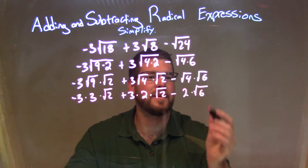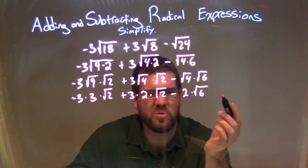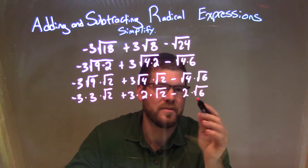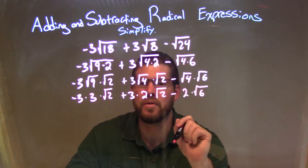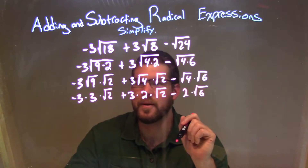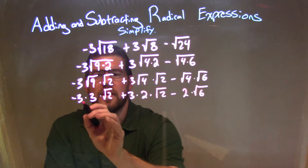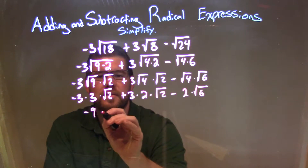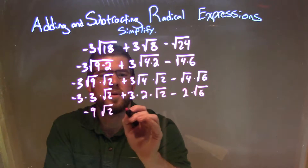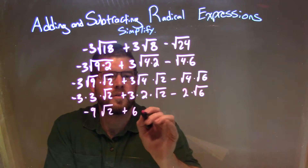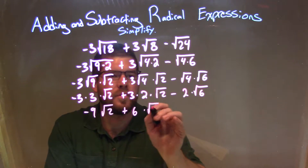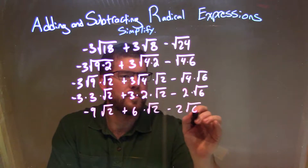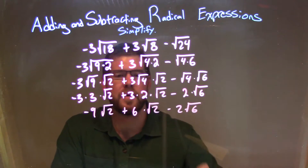Now the square root of 6 can break down to be 2 times 3, but it really can't simplify anymore from there, so we're just going to leave it at square root of 6. Simplifying the coefficients: negative 3 times 3 is negative 9 times the square root of 2, plus 3 times 2 is 6 times the square root of 2, and then minus 2 times the square root of 6.